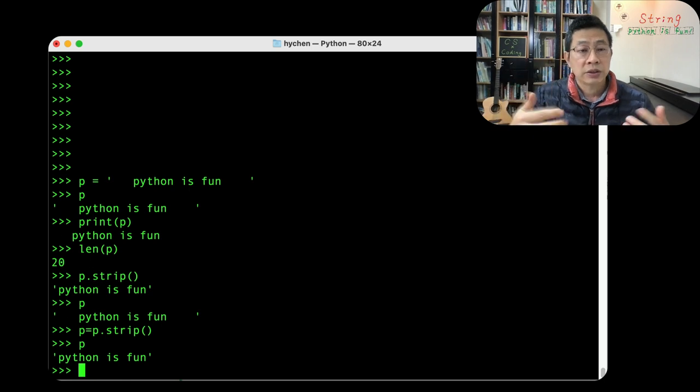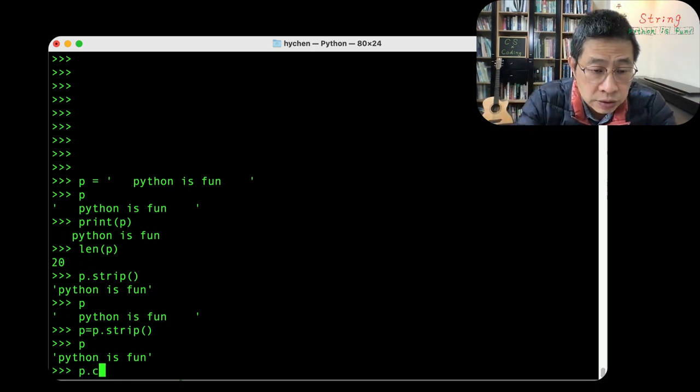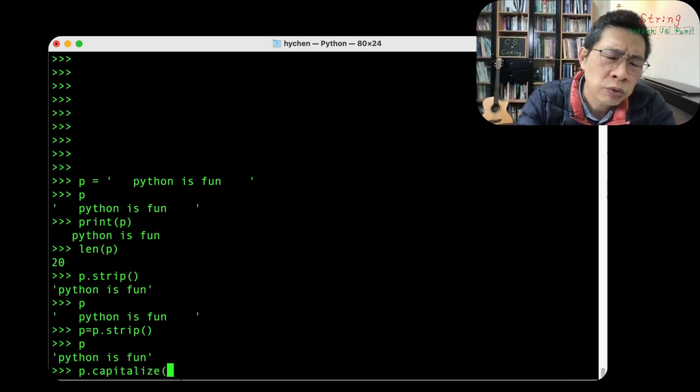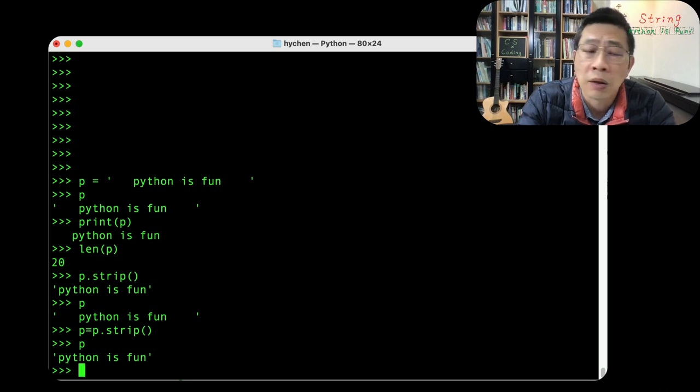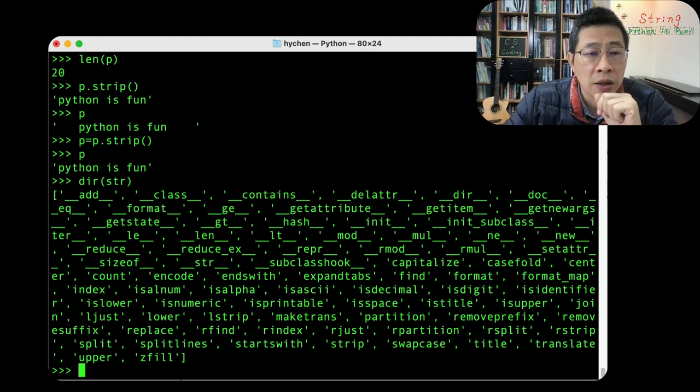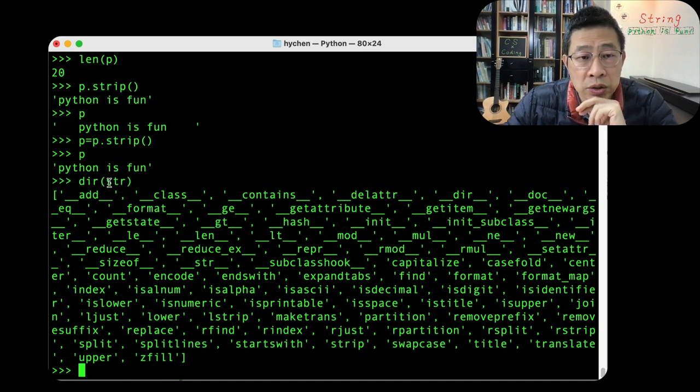Let's capitalize it, P.C-A-P-I-T-A-L, capitalize. How do I know those features? How do I know? One way you can know is to look for some online API documentation, but if you don't want to do that, you can use this feature: dir(string). This means that you want to look up, you want the interpreter to list all the methods they support in this class.